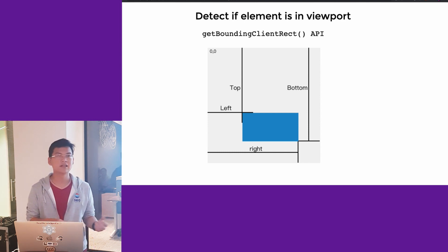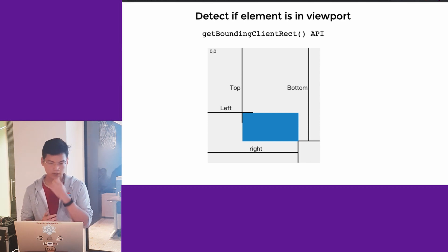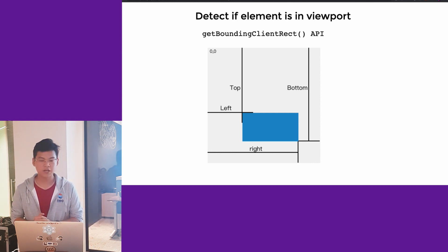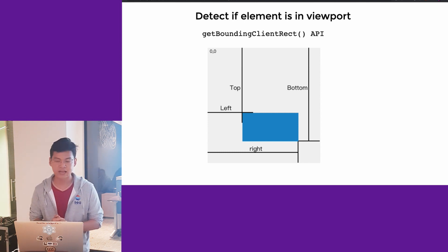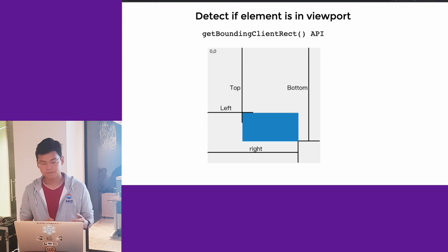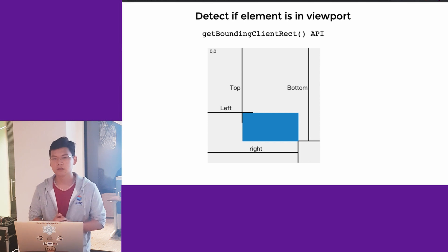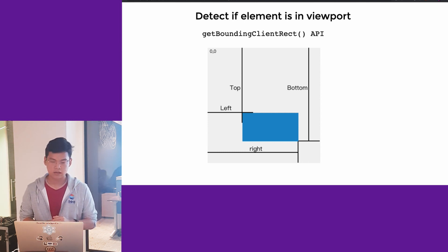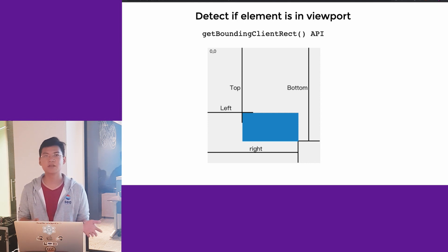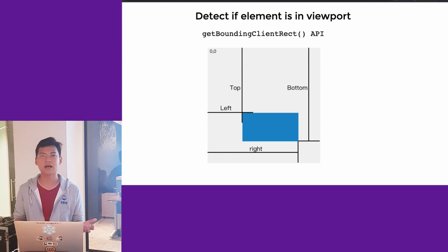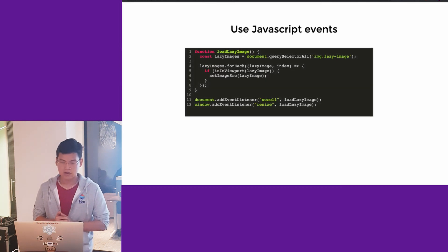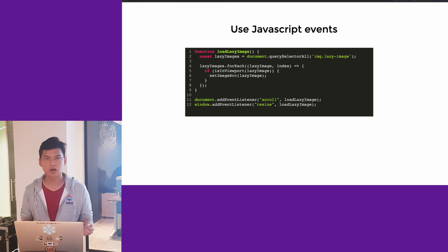To detect whether an element is in the viewport, we rely on the getBoundingClientRect API. This API returns the top, left, bottom, and right position of an element relative to the viewport. The problem reduces to a classic algorithm question: given the coordinates of two rectangles, determine whether they overlap. After that, we can listen to JavaScript scroll and resize events on the document and continuously check for lazy images.